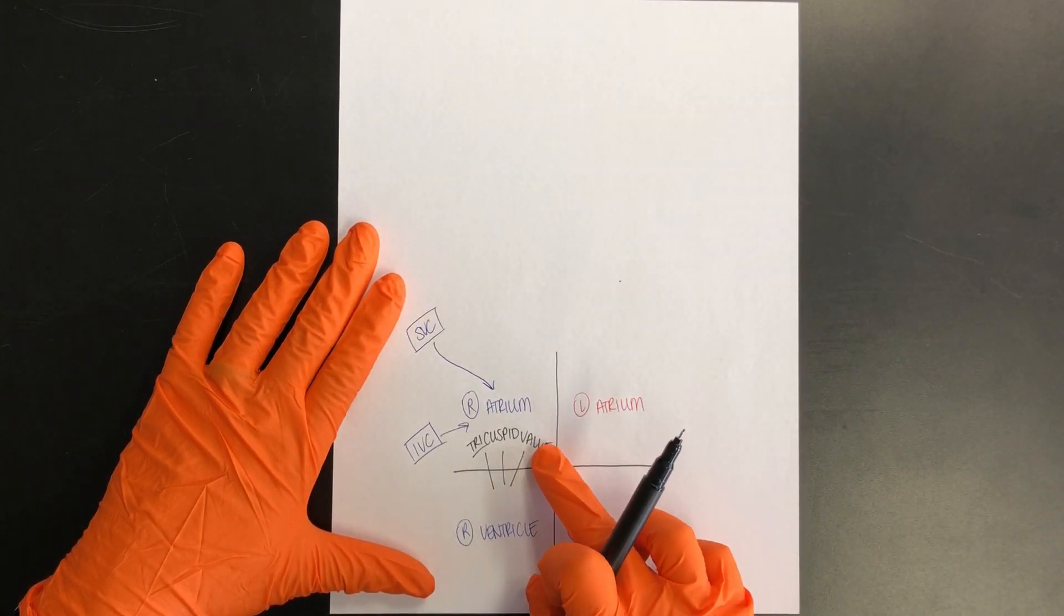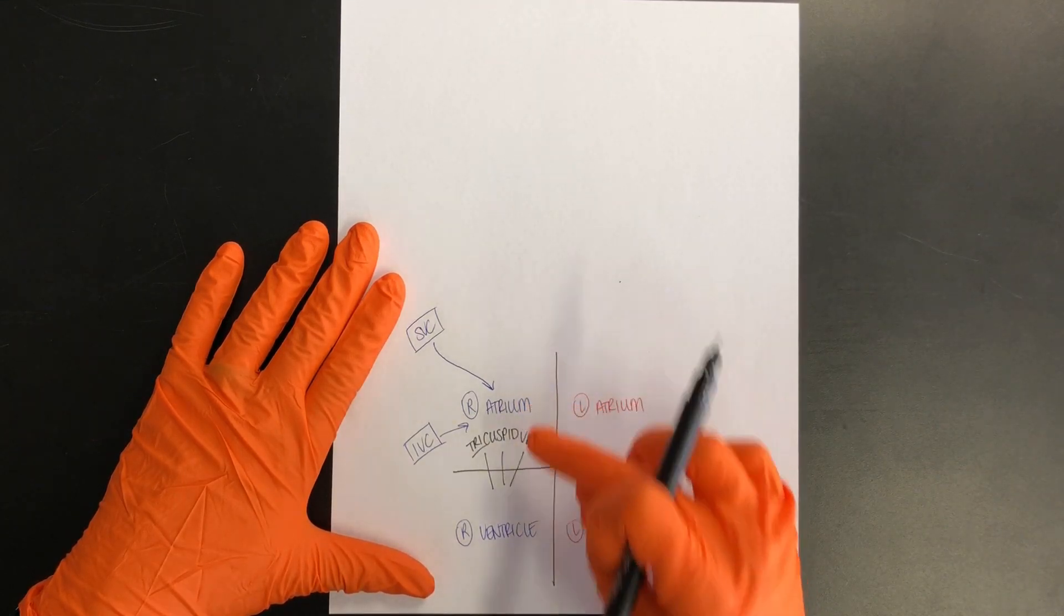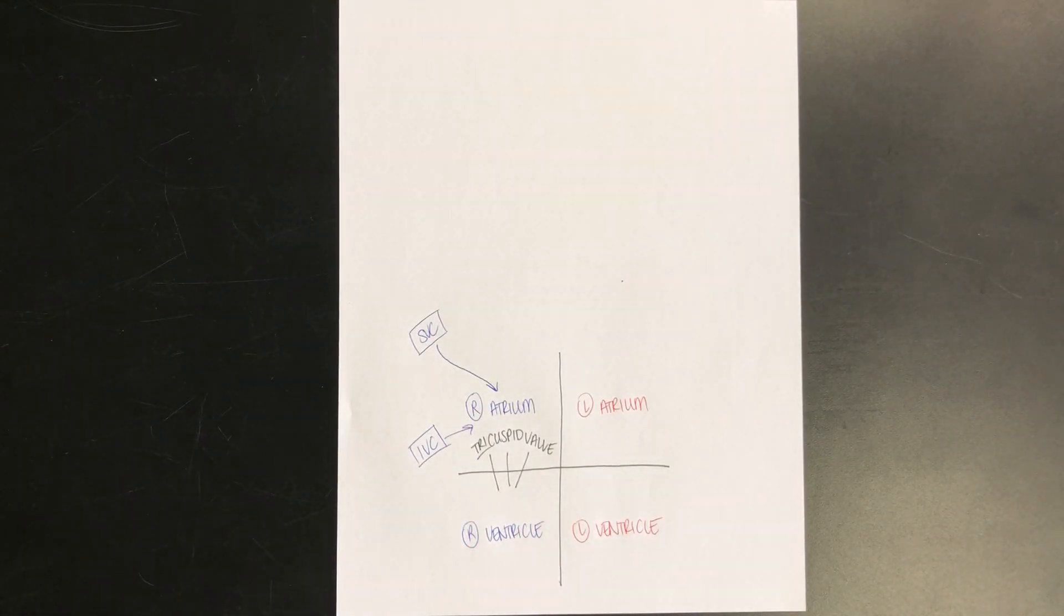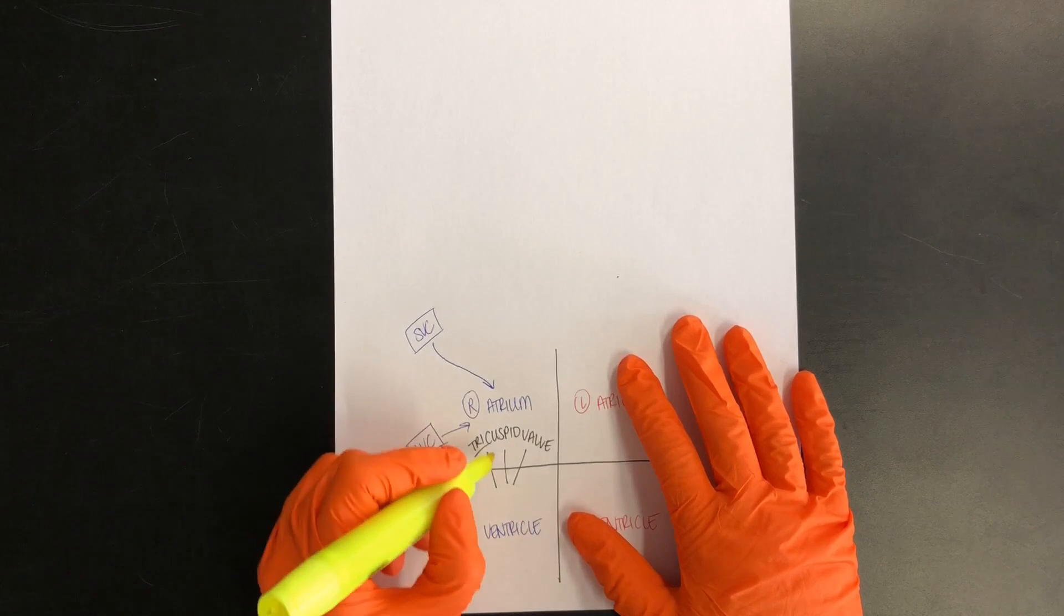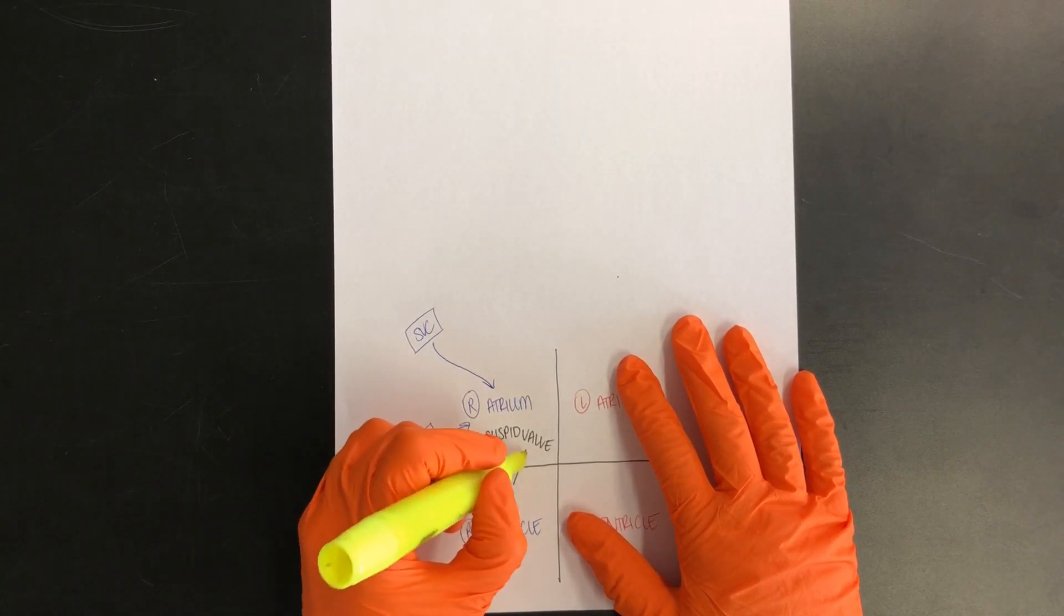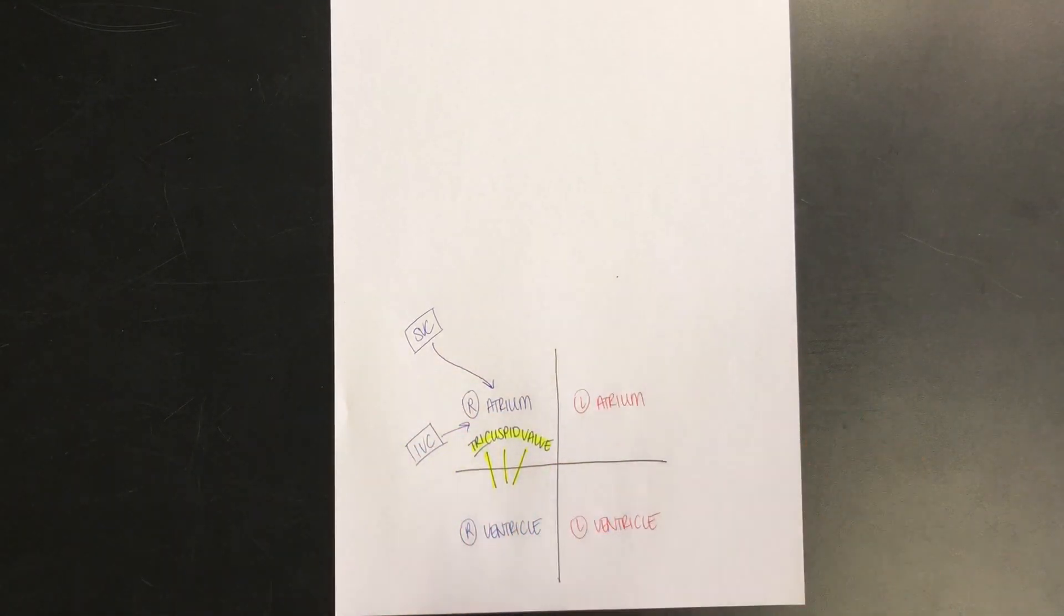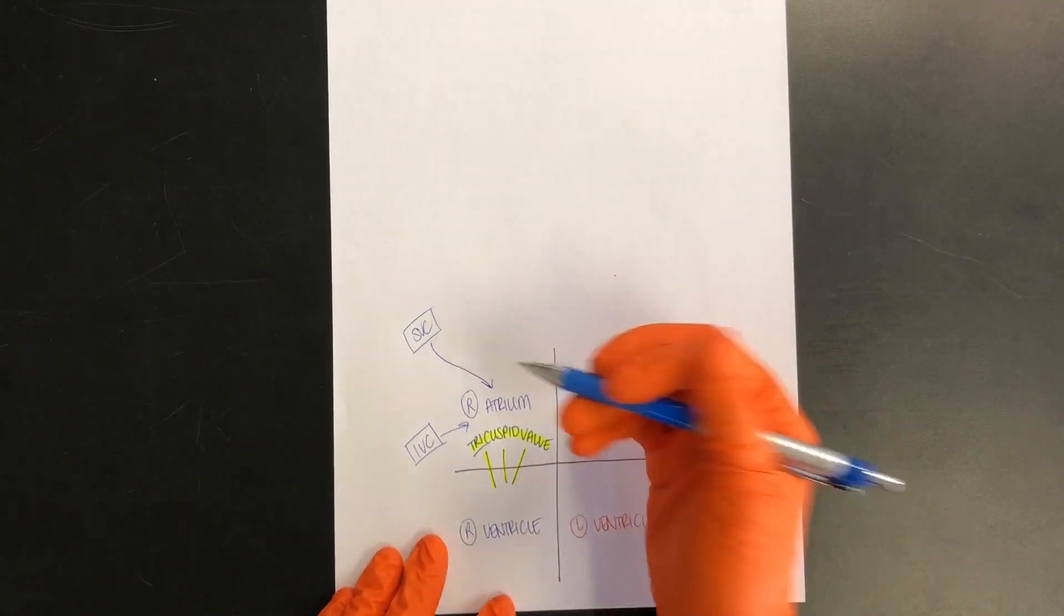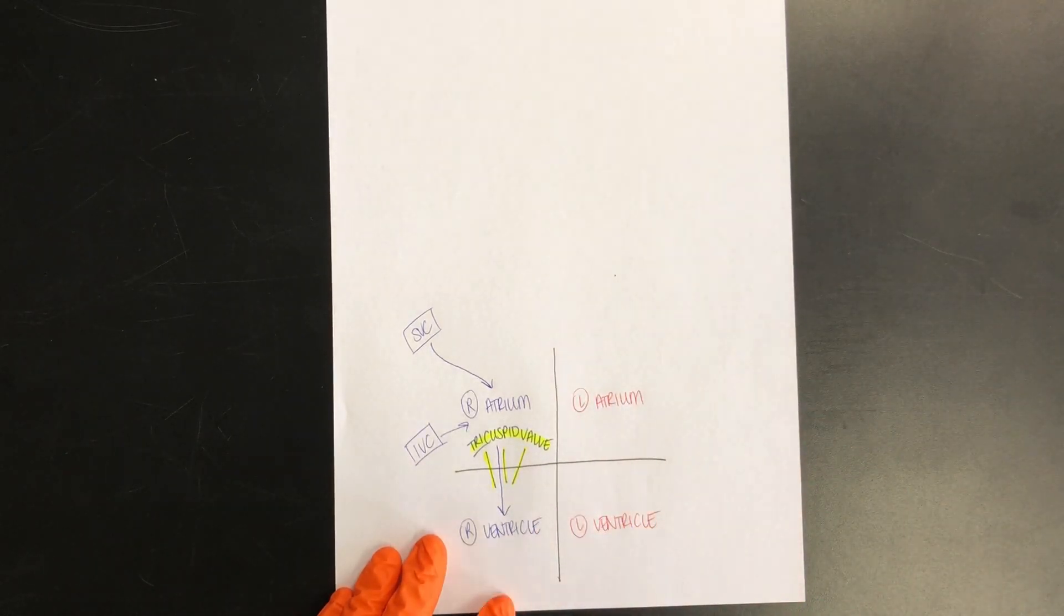This is also known as an atrioventricular valve or AV valve because it connects the atrium to the ventricle. I drew three lines here as a visual representation of the structure and to help remind us that the tricuspid is on the right hand side. So I'll take my highlighter and highlight this part because the highlighter will represent anything that is a valve. So keeping our blue pen, we're going to go from the right atrium through this door into the right ventricle.